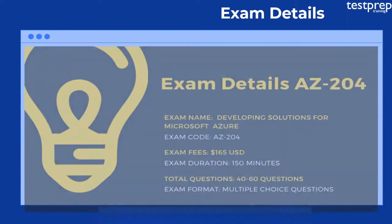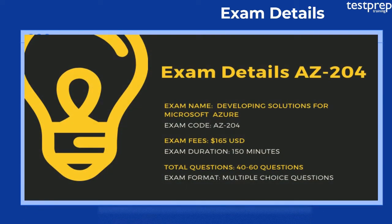Exam Details: The Microsoft Azure Beta AZ-204 Exam gives 150 minutes to a candidate to complete the exam; make sure that you complete and recheck the exam within the given time period. The format of the exam is multi-response and multiple choice questions. The Microsoft exam generally includes 40 to 60 questions, which may vary depending on the nature of the exam. The exam will cost a candidate approximately 165 US dollars. The exam is available in the English language and has no retirement date.